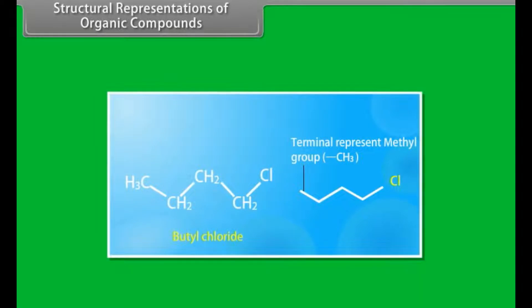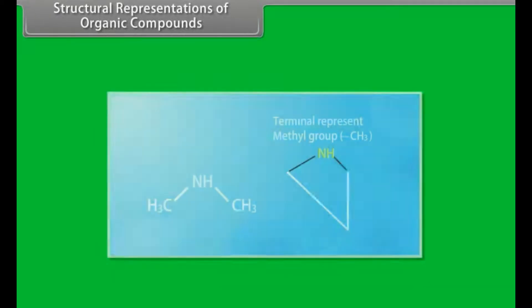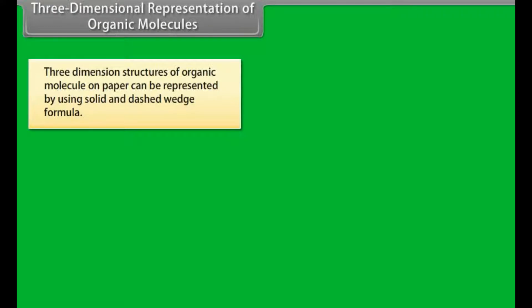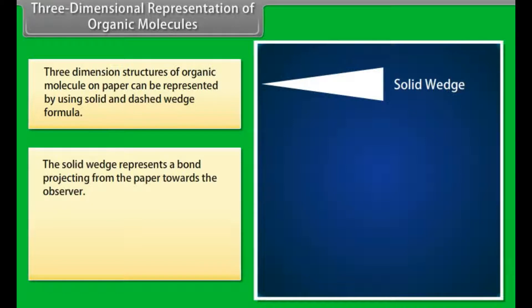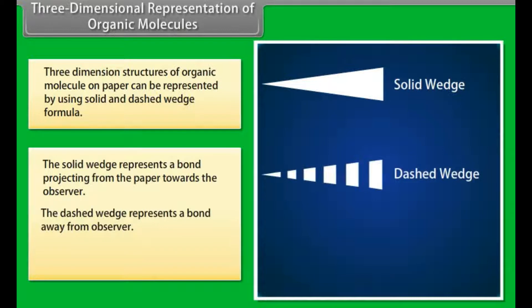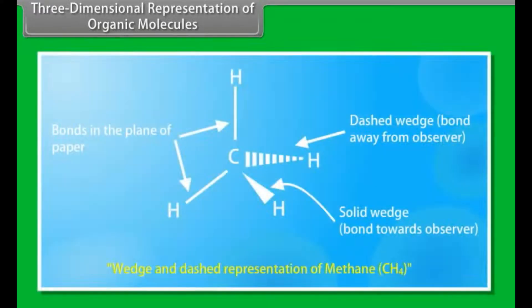For example: butyl chloride, propene, cyclohexane, diethyl ether, dimethylamine. Three-dimensional representation of organic molecules: three-dimensional structures of organic molecules on paper can be represented by using solid and dashed wedge formula. The solid wedge represents a bond projecting from the paper towards the observer. The dashed wedge represents a bond away from observer. A simple line represents a bond that lies in the plane of paper. For example, methane.